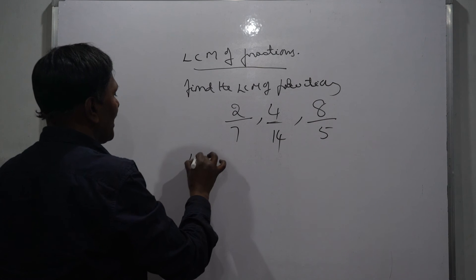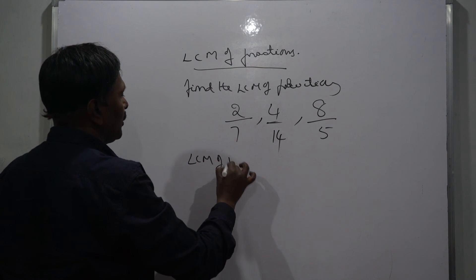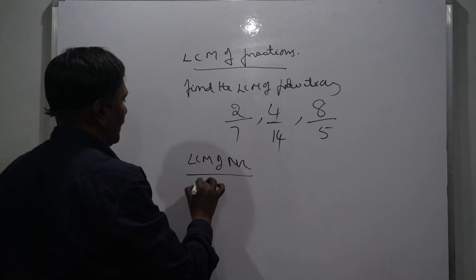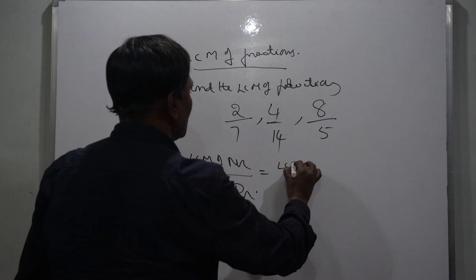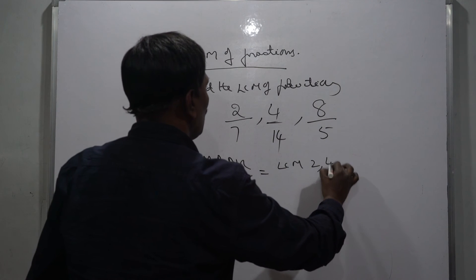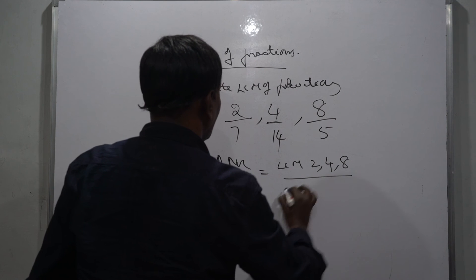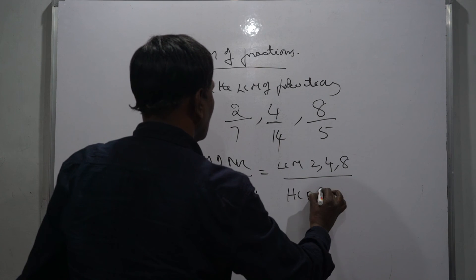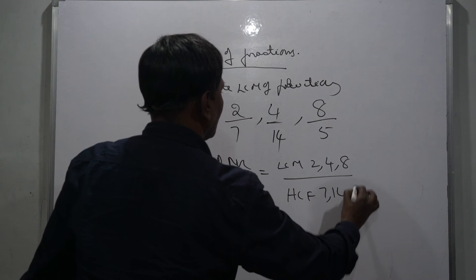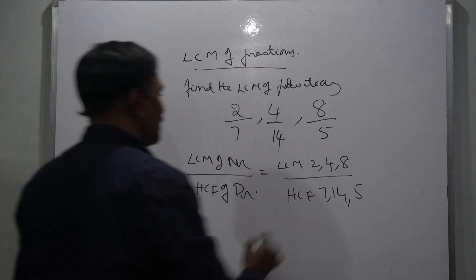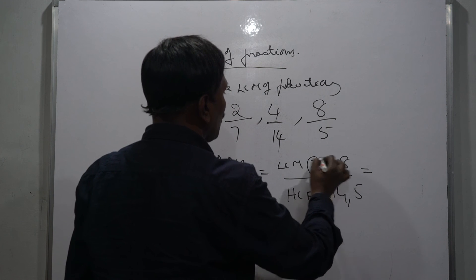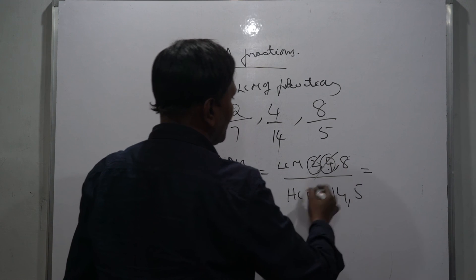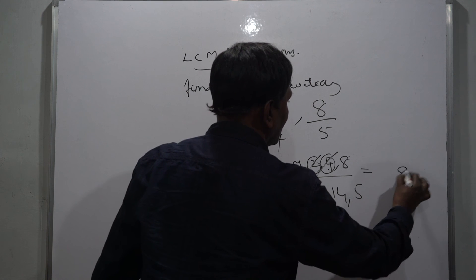LCM of 2, 4, 8 by HCF of 7, 14, 5. See, 2 is a factor of 4, you can eliminate. 4 is a factor of 8, you can eliminate. So LCM is 8.